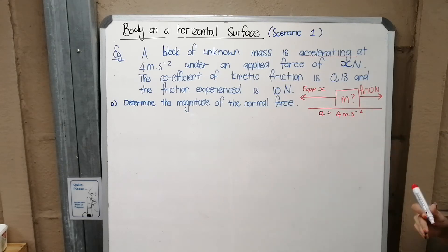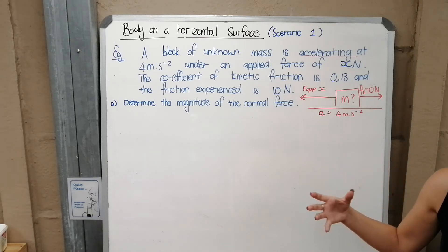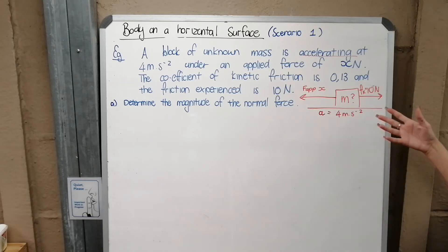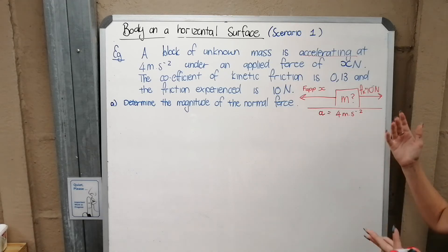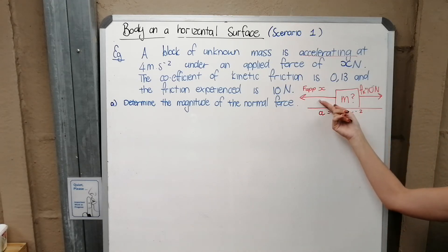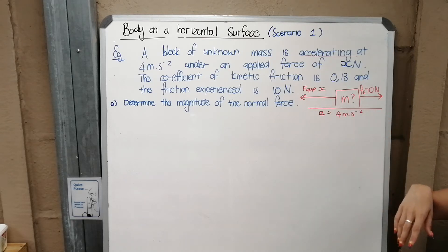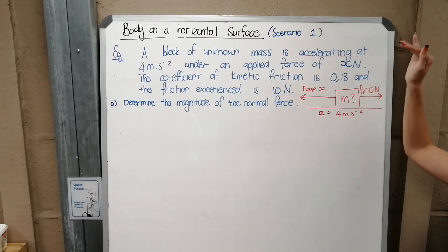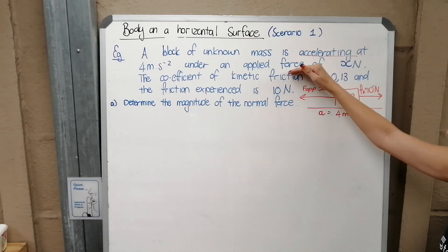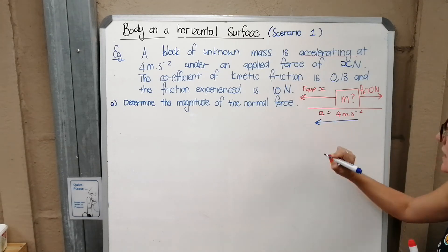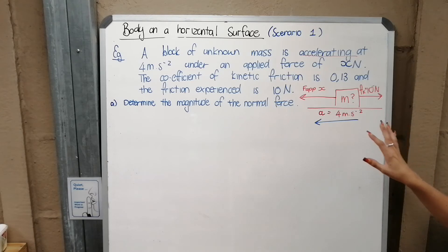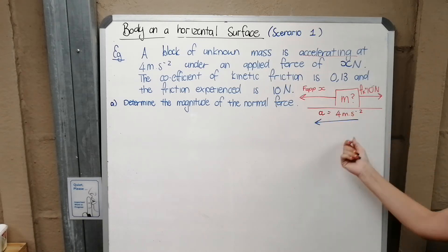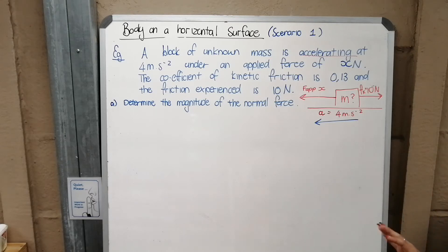The direction of acceleration is the same as the net force direction, from Newton's second law. Since no direction is specified, we assume the acceleration is in the same direction as the applied force — to the left. If we end up with a negative value for the applied force, that would mean acceleration was actually in the other direction.